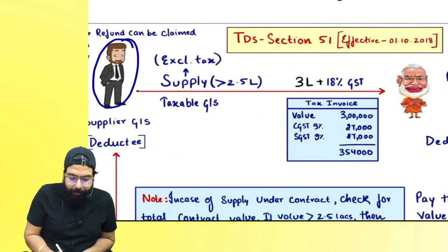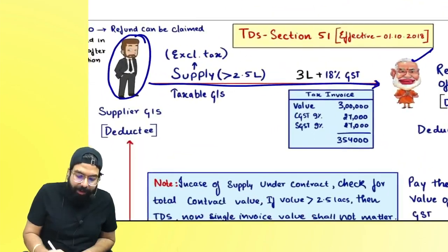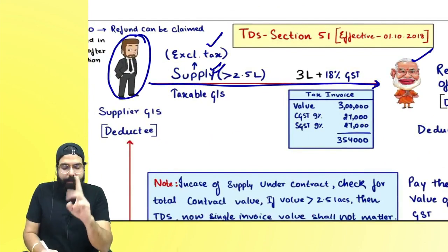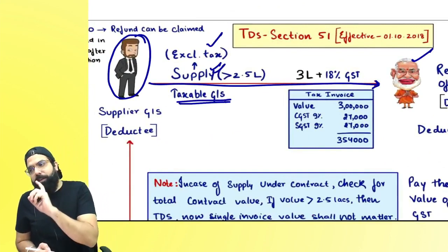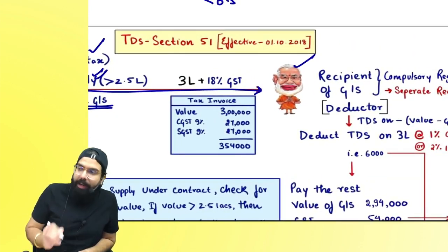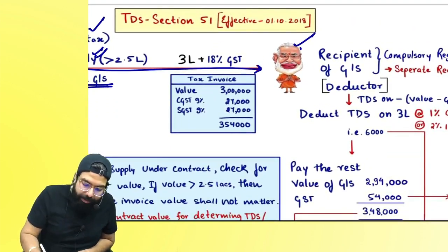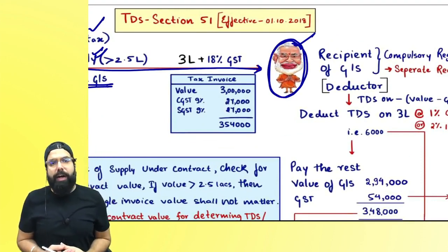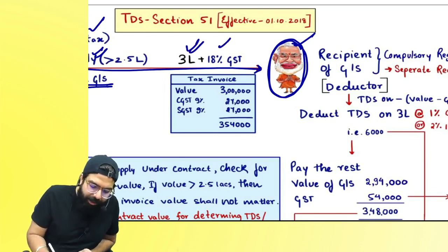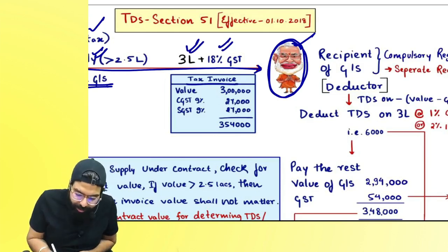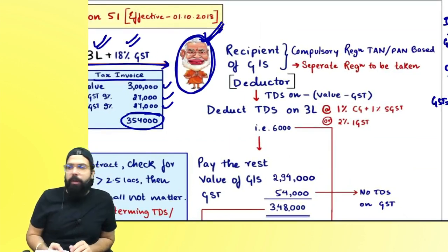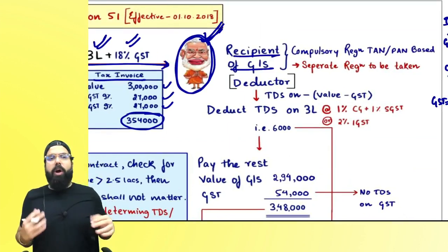Whenever a supplier supplies to a government department, if the value of supplies is greater than ₹2.5 lakh excluding GST, and it relates to a taxable supply of goods and services, then the recipient — the deductor — has to deduct TDS. For example: ₹3 lakh plus 18% GST, so the invoice is ₹3 lakh plus ₹54,000, totalling ₹3,54,000.